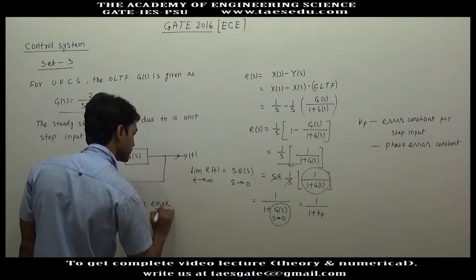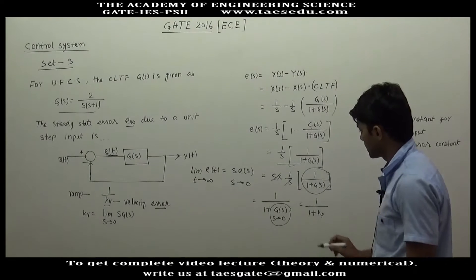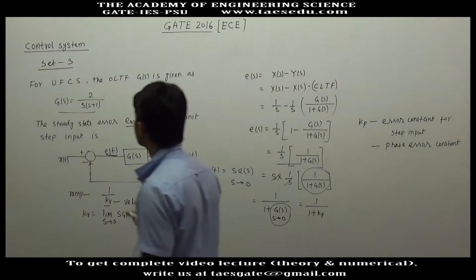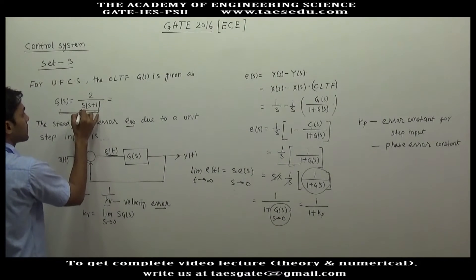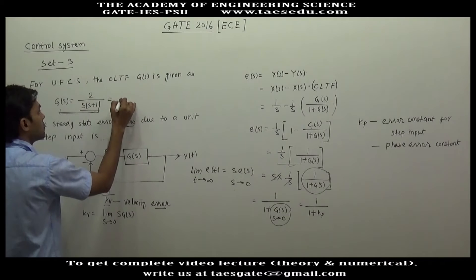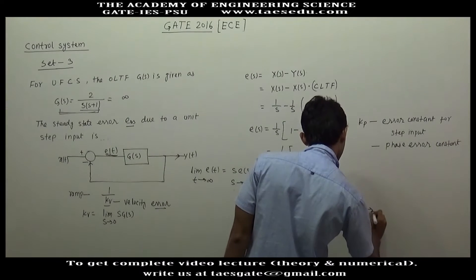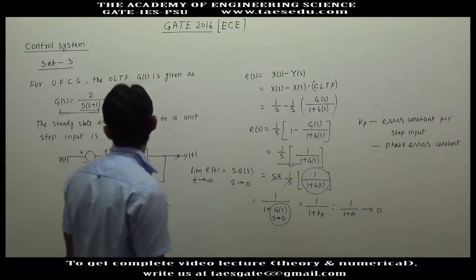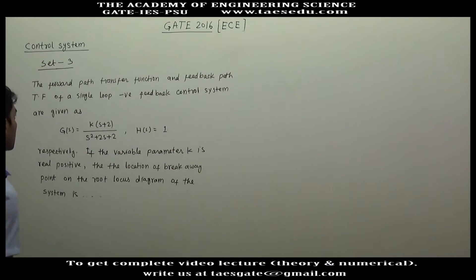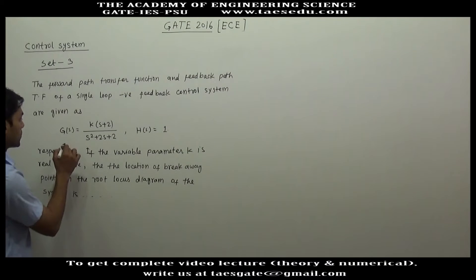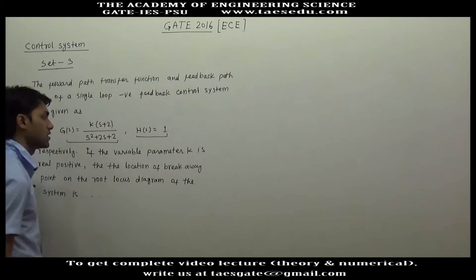We have to find the value of G(s) when s tends to 0. If s tends to 0 in this equation, the denominator becomes 0, giving infinity. So we have 1/(1 plus infinity), which tends to 0. Therefore the steady-state error will be 0.